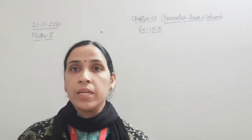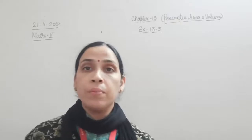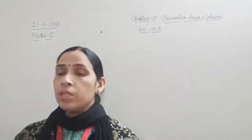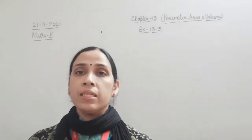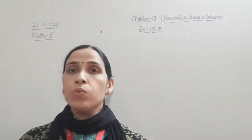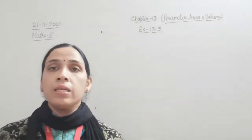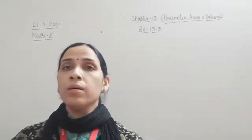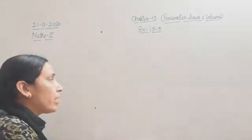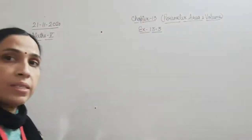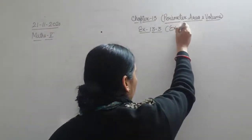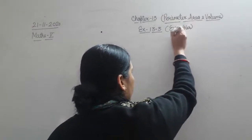The formula for finding area of a rectangle is length multiplied by breadth, and area of a square is side multiplied by side. So children, from exercise 13.3, we were taking examples in the last class. Today I will continue with the examples and after understanding them, we are going to shift to the questions from exercise 13.3.